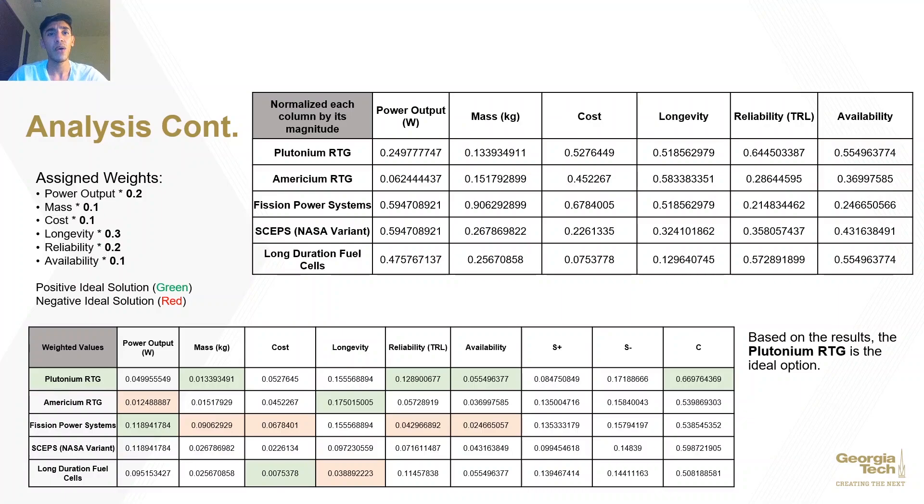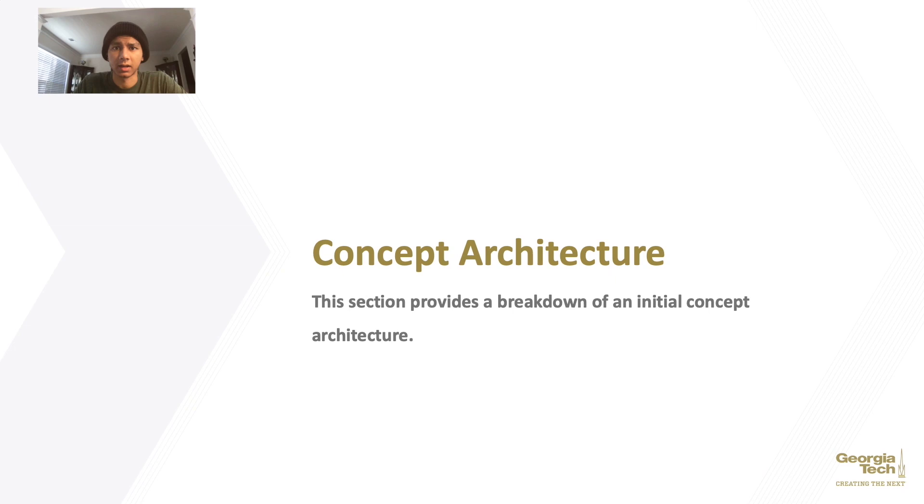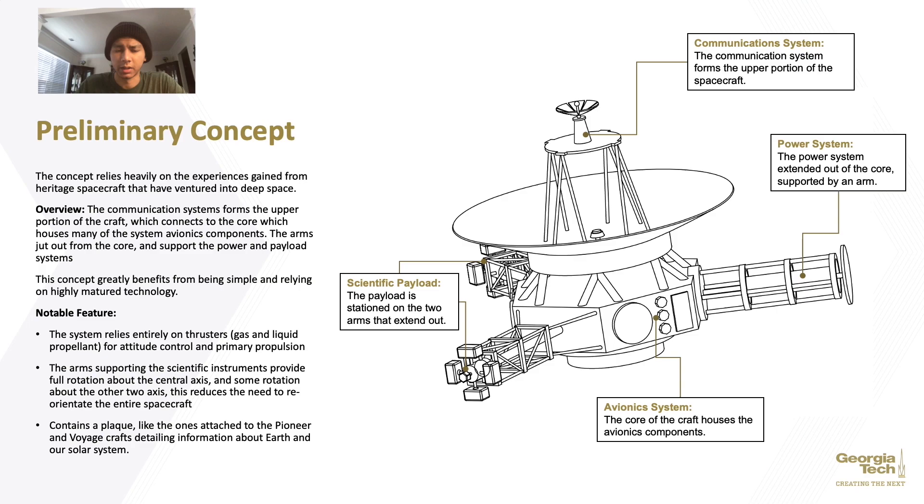Now, after this trade study analysis, we will take a look at the design of our spacecraft and how these systems will be implemented through our concept architecture. So, I'd like to shift our focus now and talk about the concept architecture of our system. The figure shown here represents our preliminary design. This design was heavily inspired by designs of previous generation spacecraft that were mentioned in deep space. So, let's go through a quick overview.